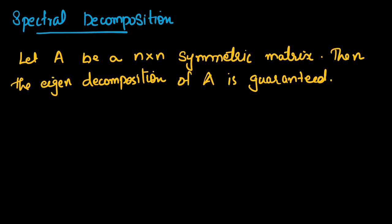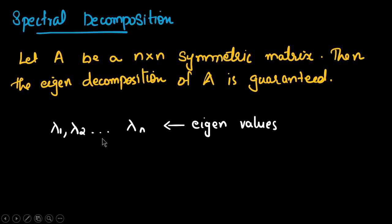For the spectral decomposition, if A is an n×n symmetric matrix, then the eigen decomposition of A is guaranteed. This means that if A is symmetric, it is guaranteed that the algebraic multiplicity and the geometric multiplicity are equal, and the eigen decomposition of A is guaranteed.